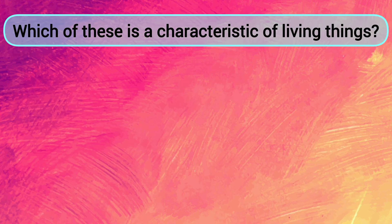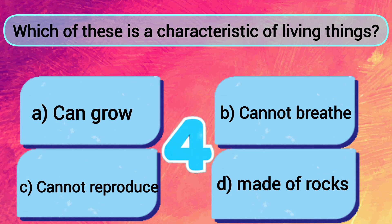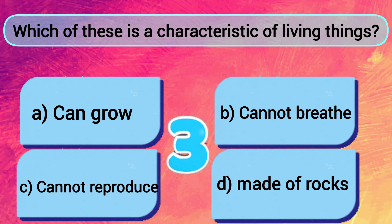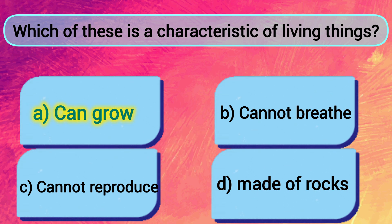Which of these is a characteristic of living things? A: Can grow. B: Cannot breathe. C: Cannot reproduce. D: Made of rocks. The answer is A — can grow.